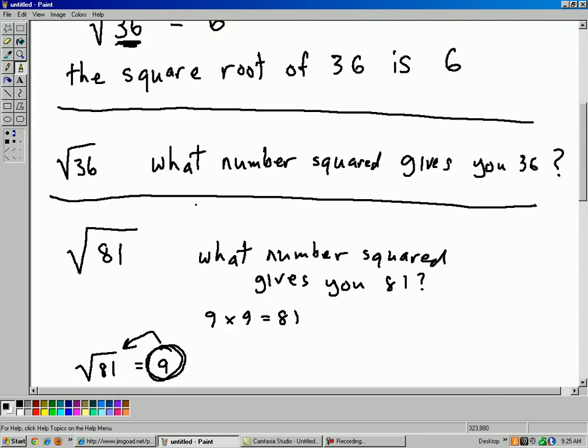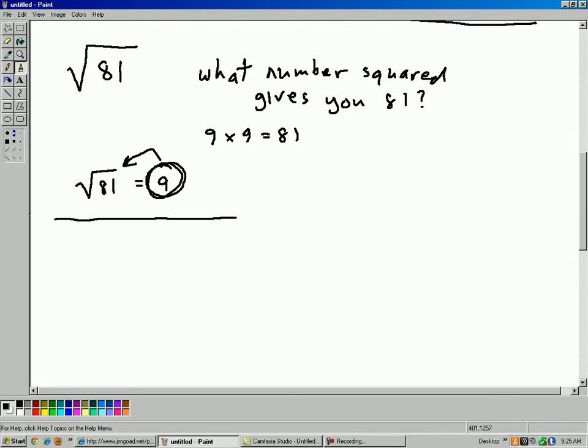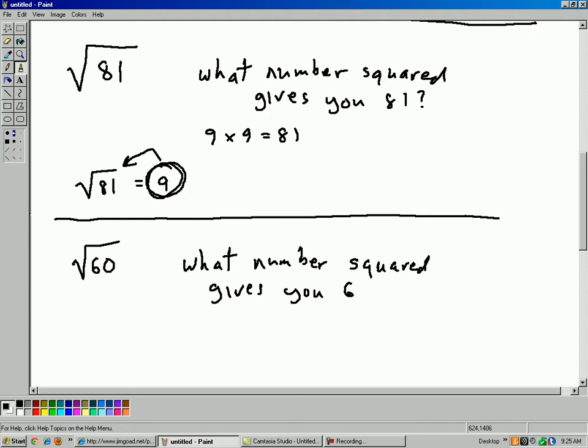So the examples I gave so far, square root of 36, square root of 81, they worked out really nicely because the answer was both whole numbers. But what if you have something like, say, square root of 60? This doesn't have a nice easy answer. It's the same idea though. So what number squared, or what number times itself, what number squared gives you 60?